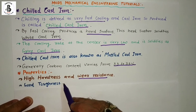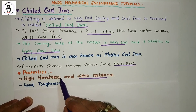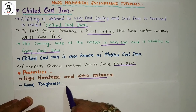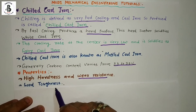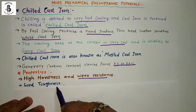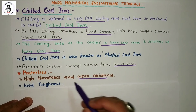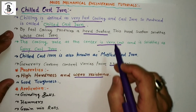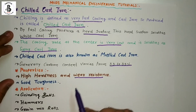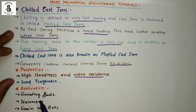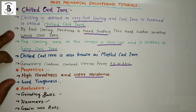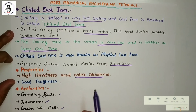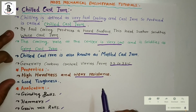Chilled cast iron has higher hardness along with good toughness. Such a combination of higher hardness with good toughness gives the material many applications. Now discussing the applications of chilled cast iron: it is used in grinding balls, hammers and grain mills, rolls, and many more. This covers all the topics regarding chilled cast iron.